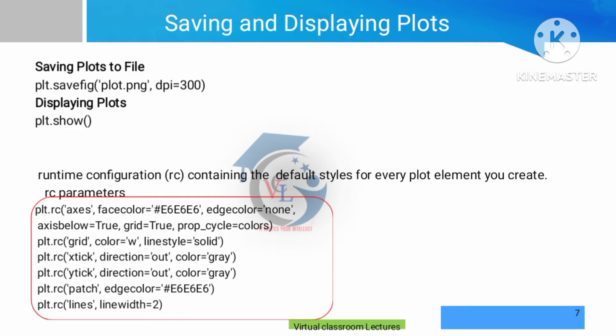Next is saving and displaying plots. We save the plot using plt.savefig() with a specified plot name and DPI — dots per inch — which defines the image quality. Then we use plt.show() to display the output. The RC parameters (runtime configurations) set the default values for the overall plot, such as font size and font family, which can be overridden.